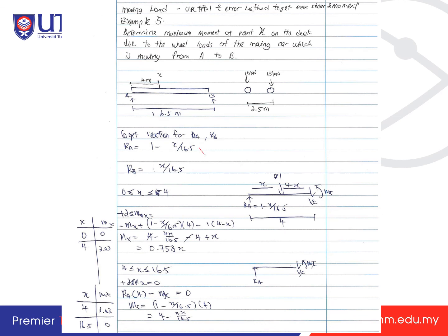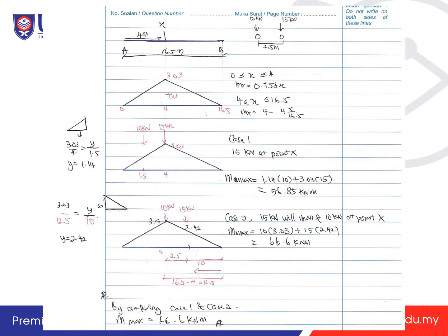For the solution: find RA and RB, then break into two parts — 0 to 4 meters and 4 to 16.5 meters — deriving MX equations for each range. Substitute values into the table and plot to get the moment influence line shape. The peak ordinate is 3.03 at point X.